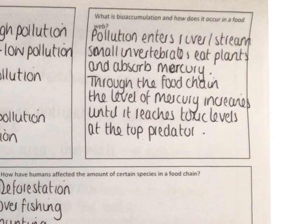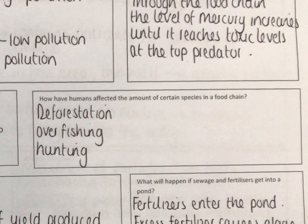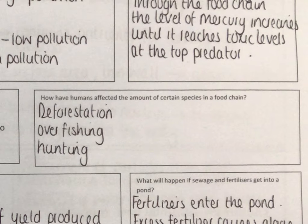How have humans affected the amount of certain species in a food chain? Through deforestation — removing their habitats — overfishing, especially in waters, and hunting of specific animals.